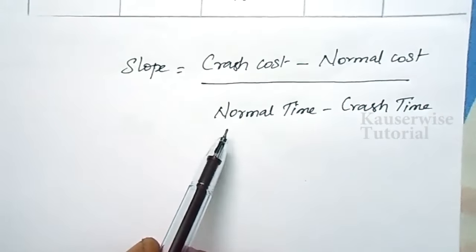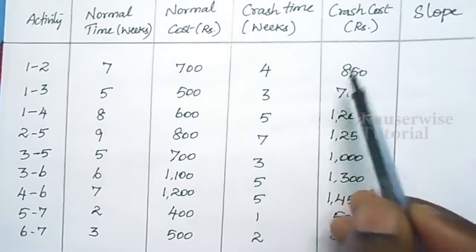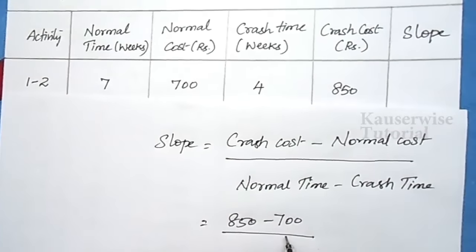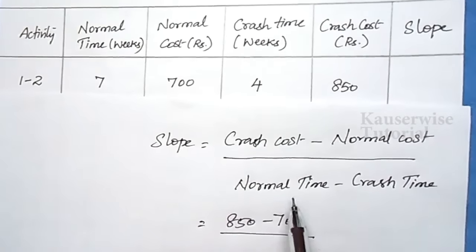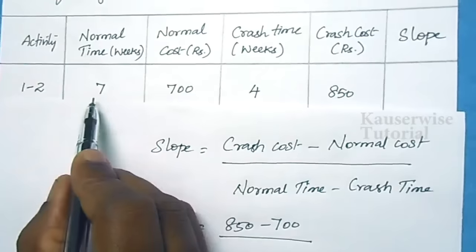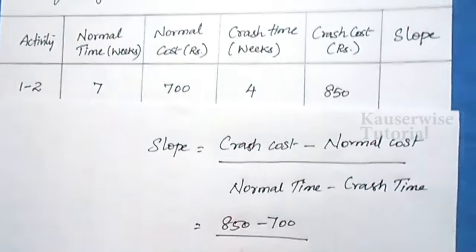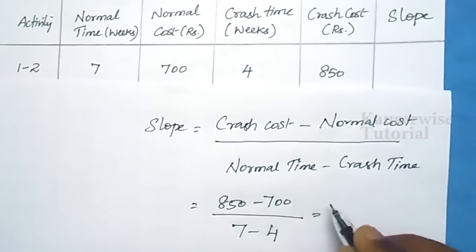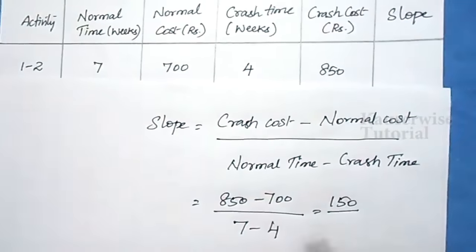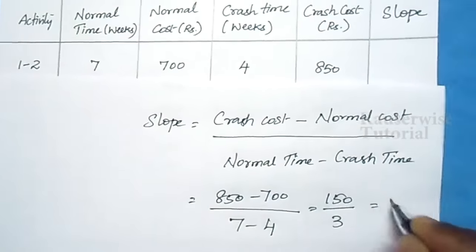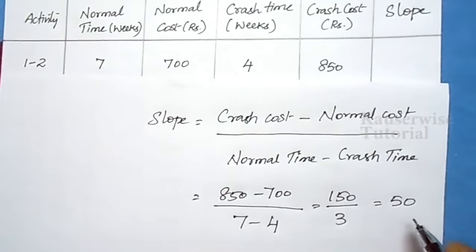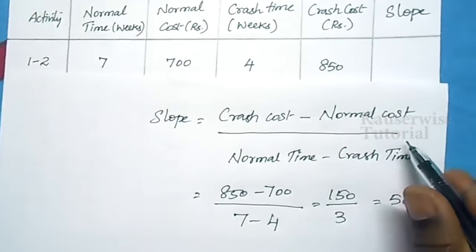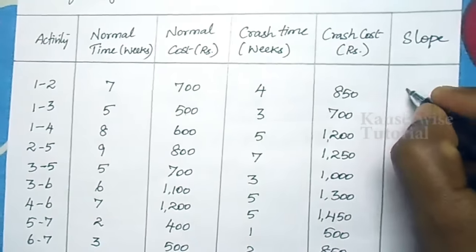For the first activity, crash cost is 850 and normal cost is 700. Normal time is 7 weeks and crash time is 4 weeks. So slope = (850 minus 700) divided by (7 minus 4) = 150 divided by 3 = 50. This is the slope. Apply this formula to find the slope for each activity. For the first activity, slope is 50; for the second activity, 100; and so on up to 350 for the others.